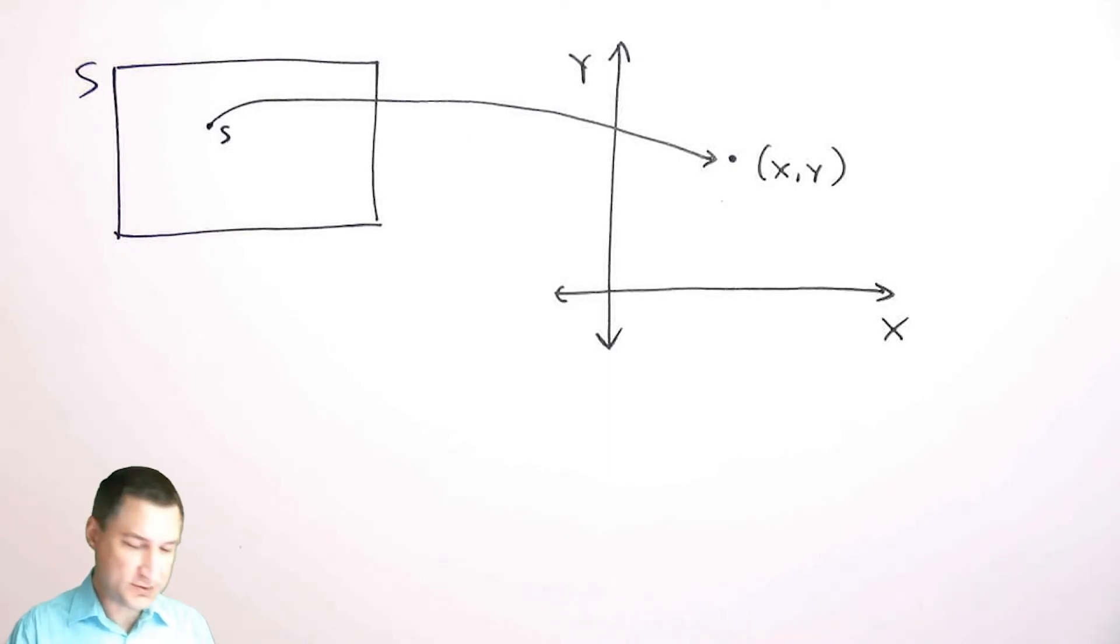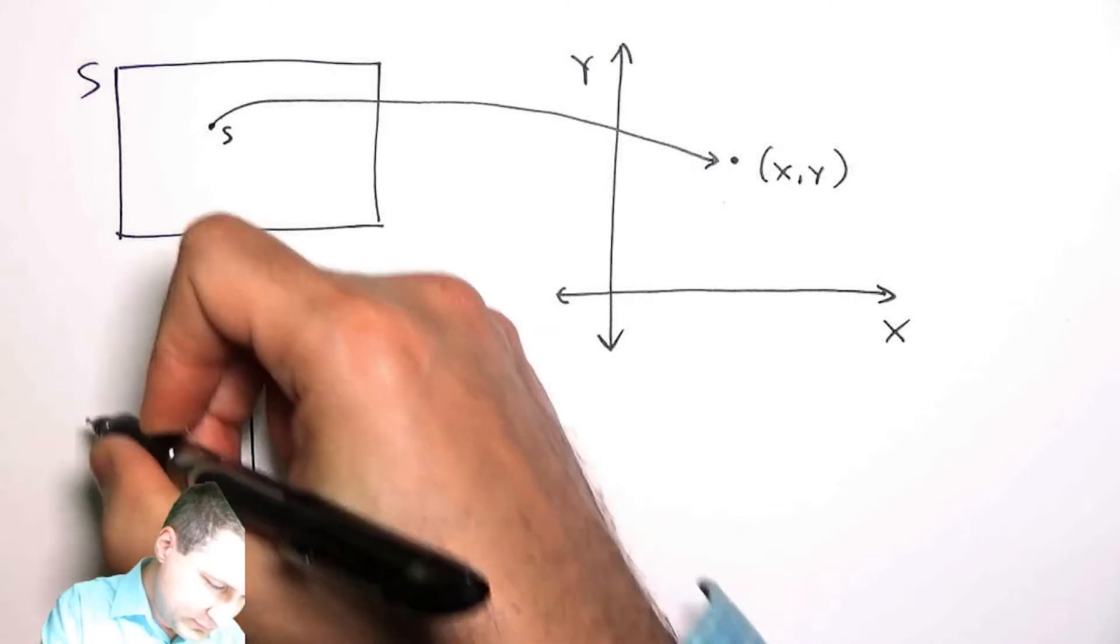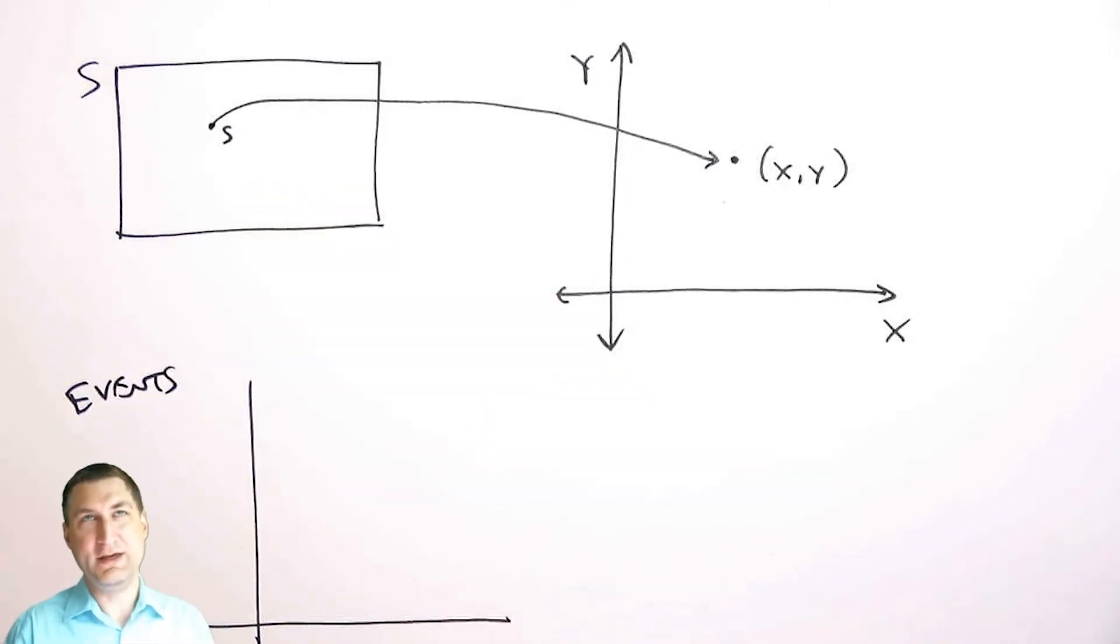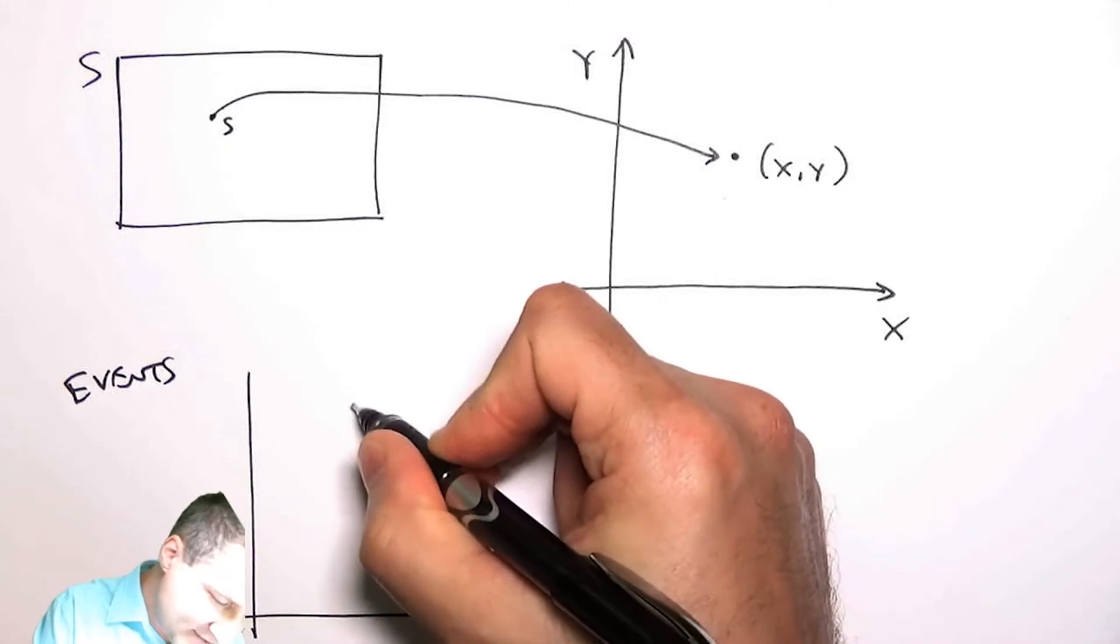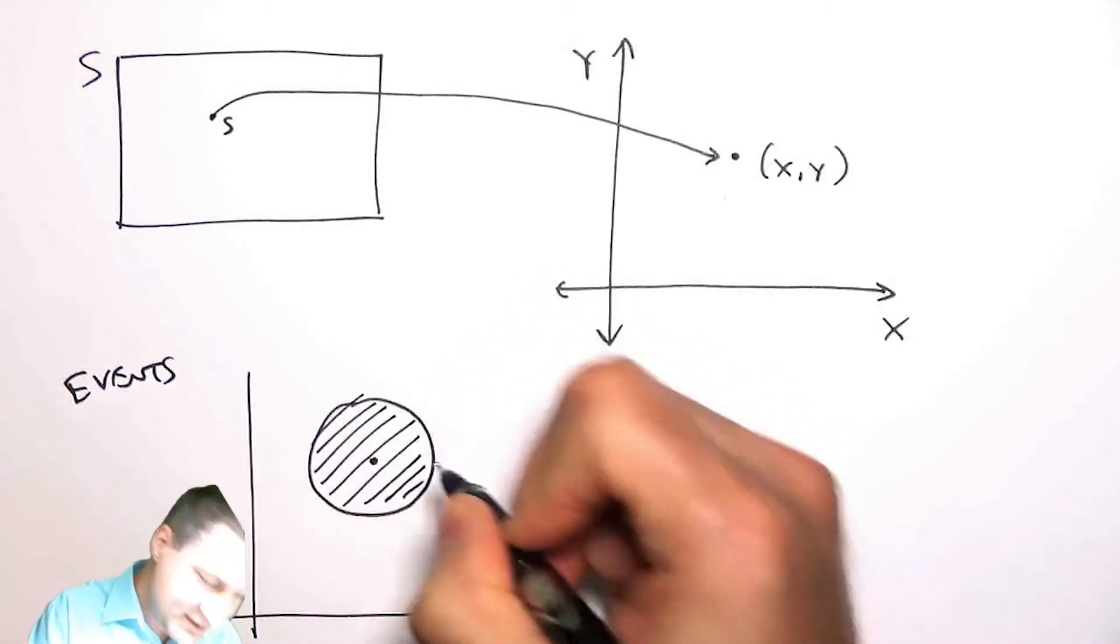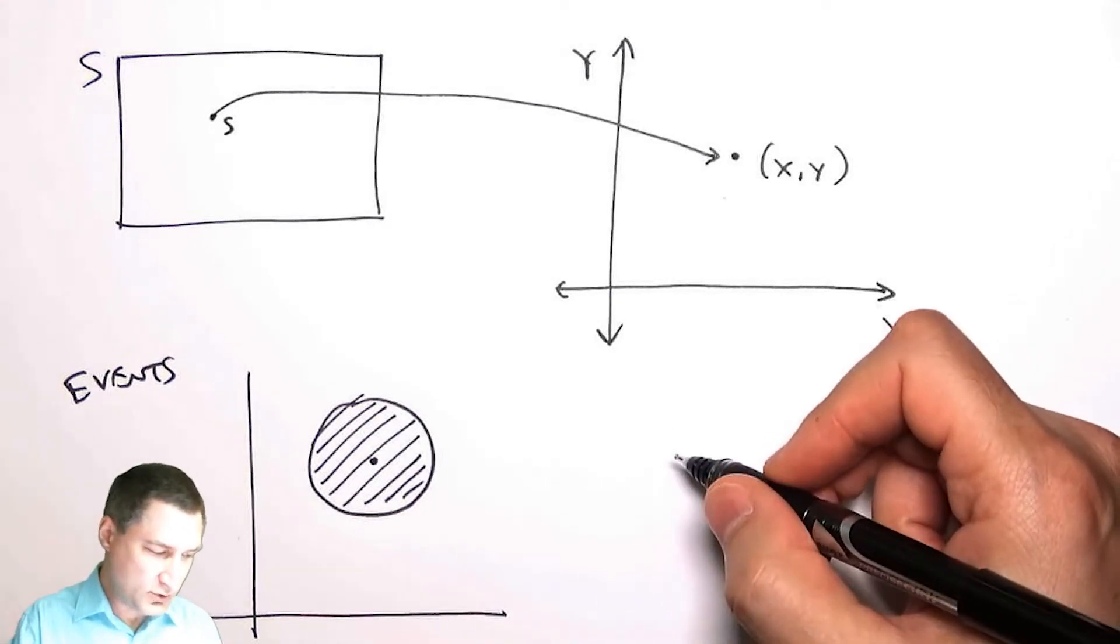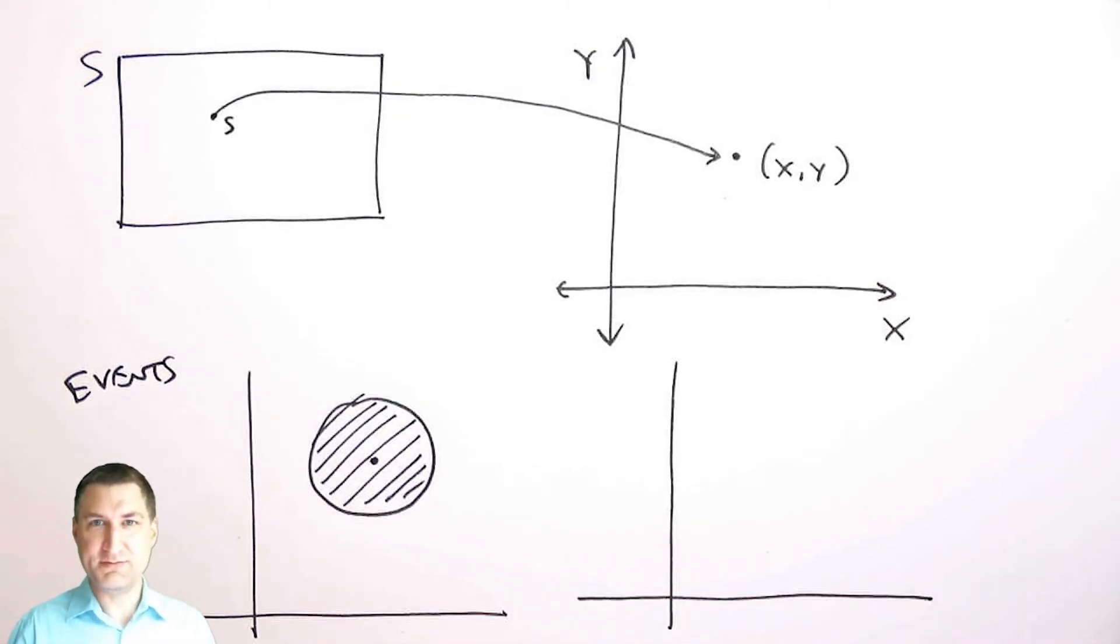Let's talk about events first of all. Events then are basically just regions of the 2D plane. For example, what do events look like? I could say, in the GPS case, what is the event that I am less than five kilometers from my house? So here's my house, and then this would be the event that corresponds to x, y being in that range.